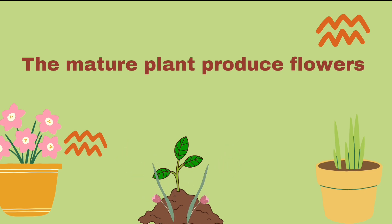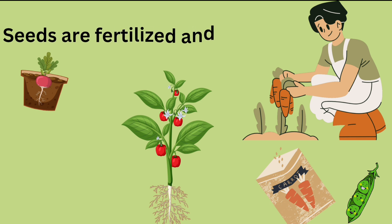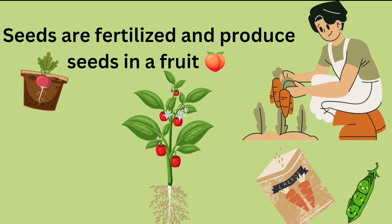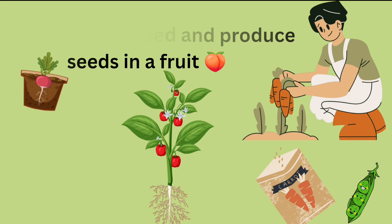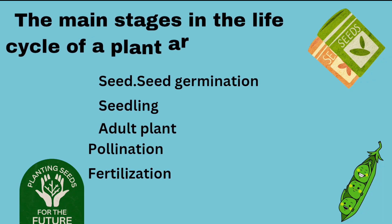A mature plant has leaves, roots, and a stem. After the plant becomes mature, the plant grows into a flower and the seeds are produced. Then the mature plant would have the stem, flower, fruits, roots, and leaves. The reproductive part of the plant is the flower — they make the seeds which turn into a new plant.